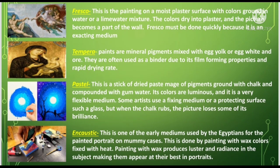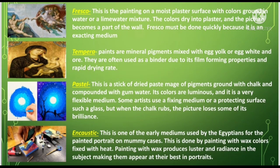We have also encaustic. This is one of the early mediums used by the Egyptians for the painted portrait on mummy cases. This is done by painting with wax colors fixed with heat. Painting with wax produces luster and richness in the subject, making them appear at their best in portraits.